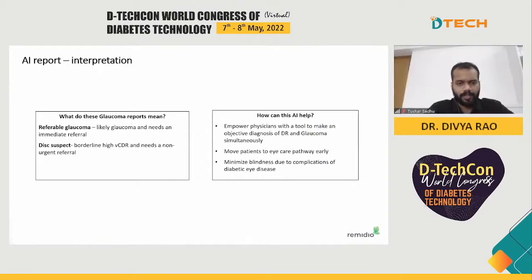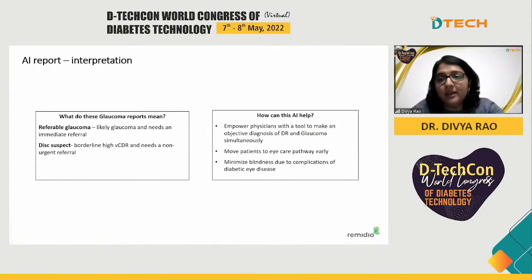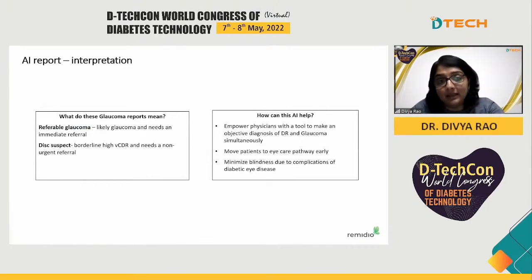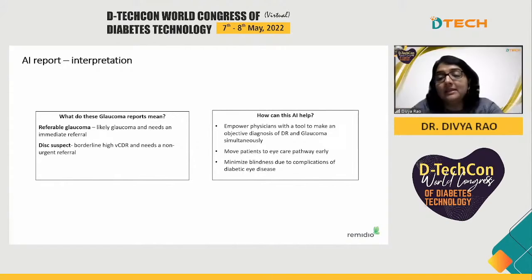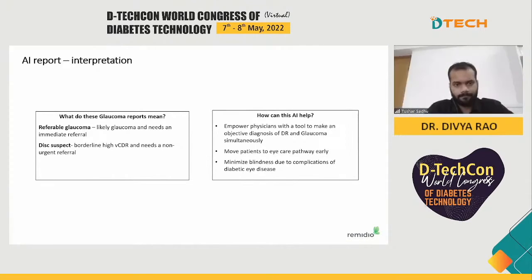What do these reports mean for a physician? If the report says 'referable glaucoma,' it means the patient has likely glaucoma and needs an immediate referral to an ophthalmologist. If the report says 'disc suspect,' it means there is an abnormal vertical cup-to-disc ratio and a non-urgent referral is needed.